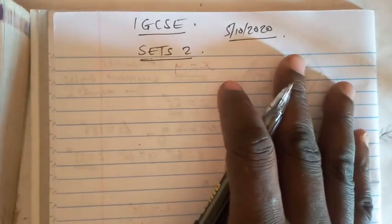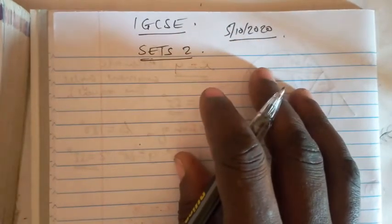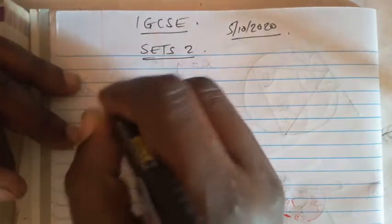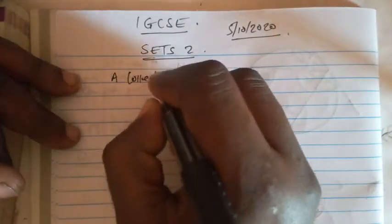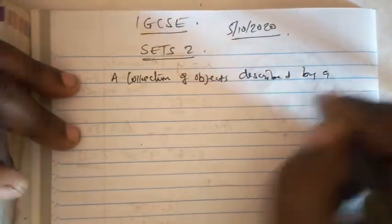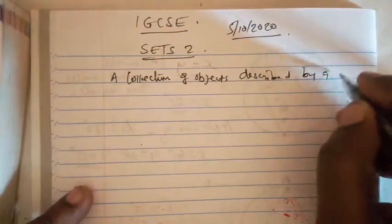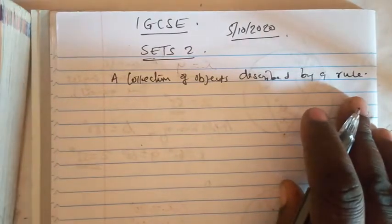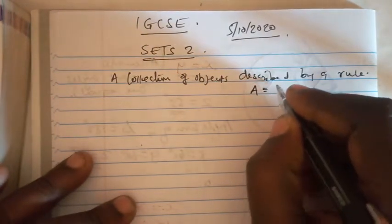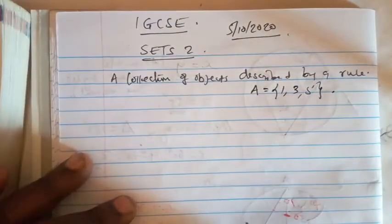I want to introduce some basic principles. A set is a collection of objects described by a list or a rule. For example, A equals {1, 3, 5} — that is a set of three numbers.